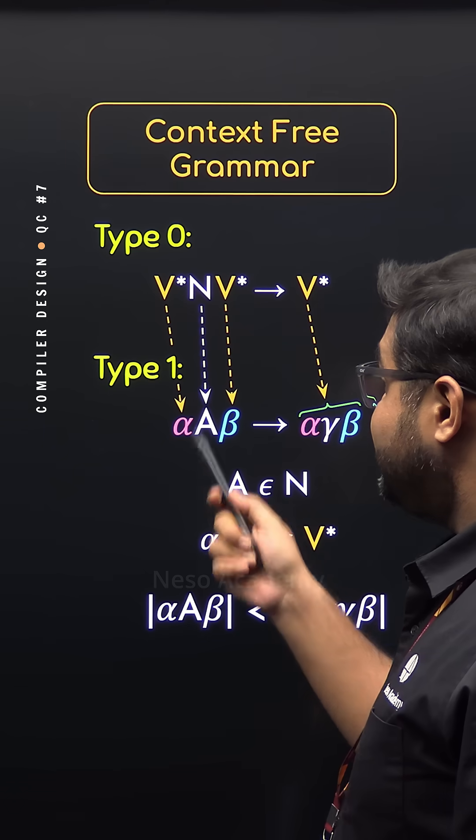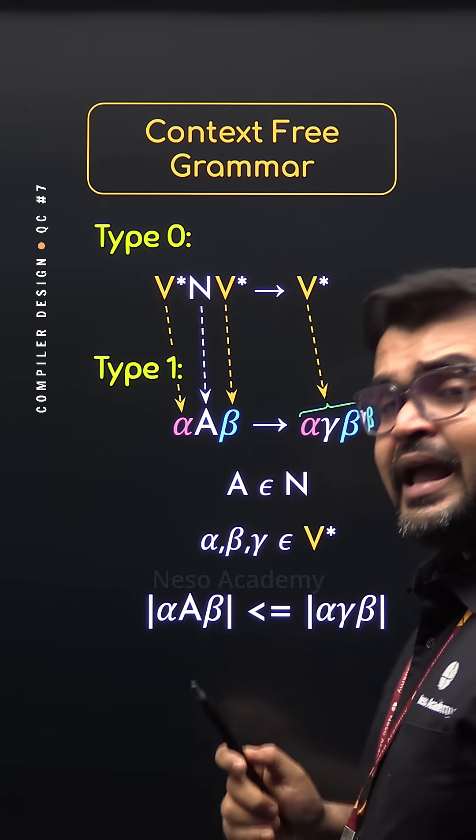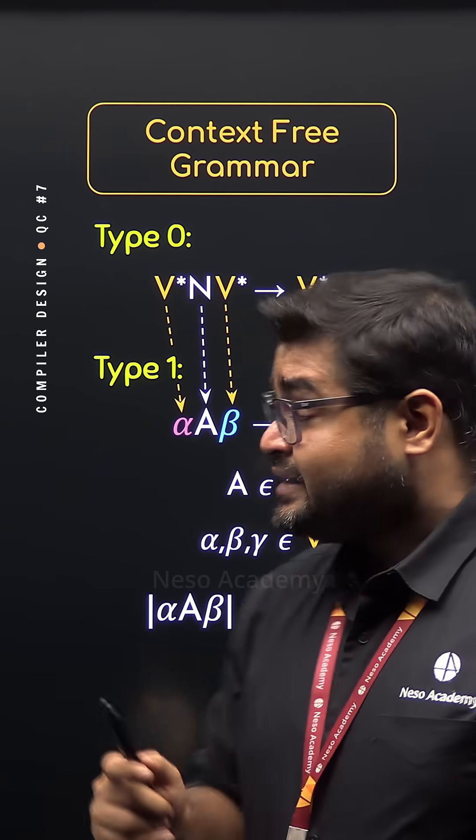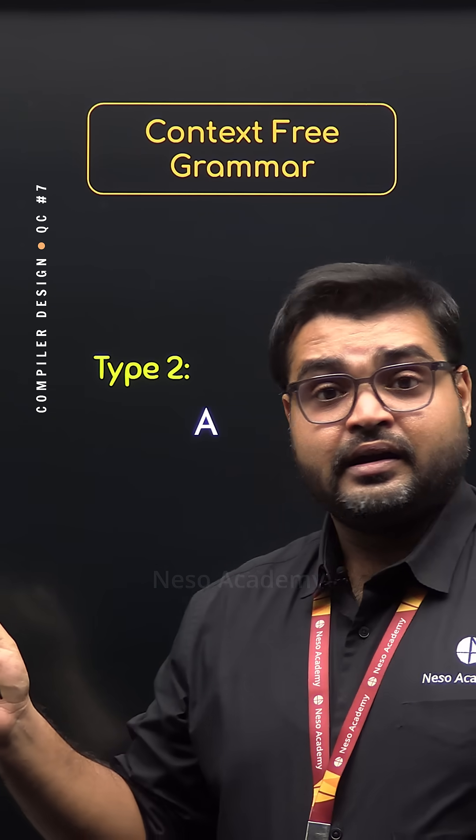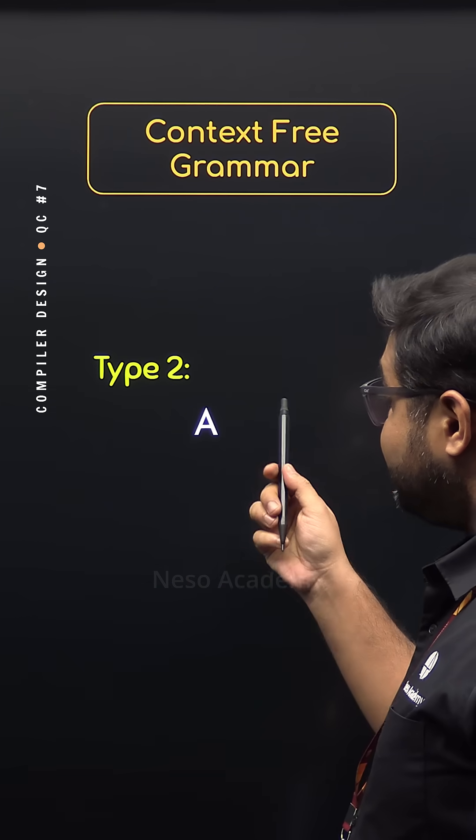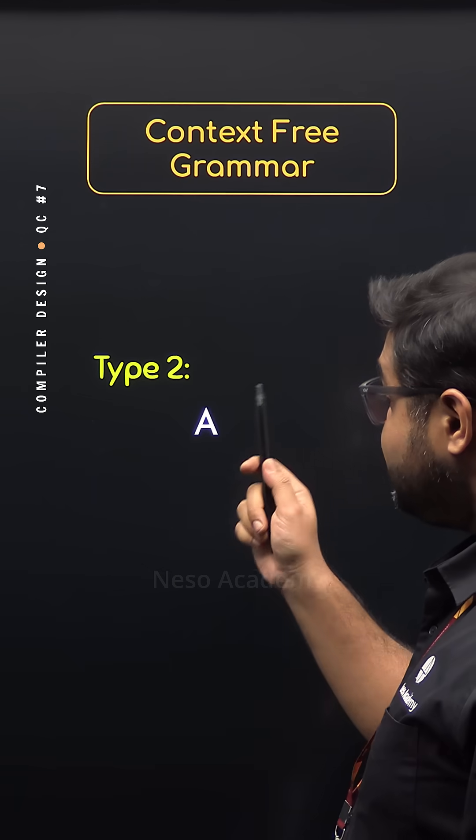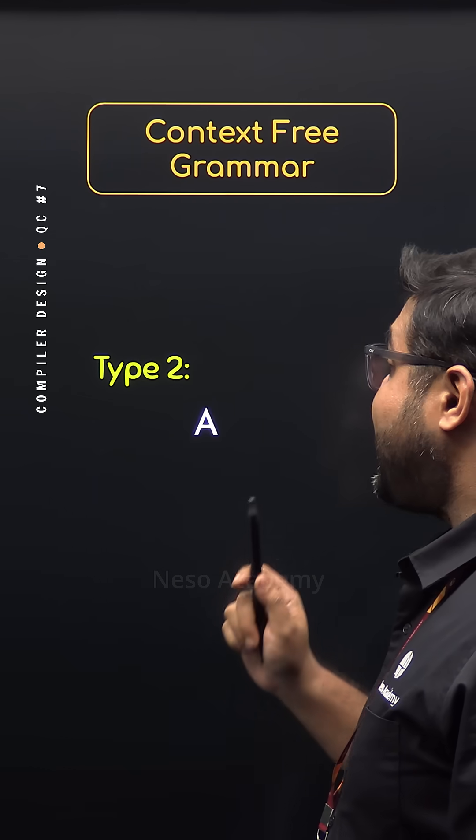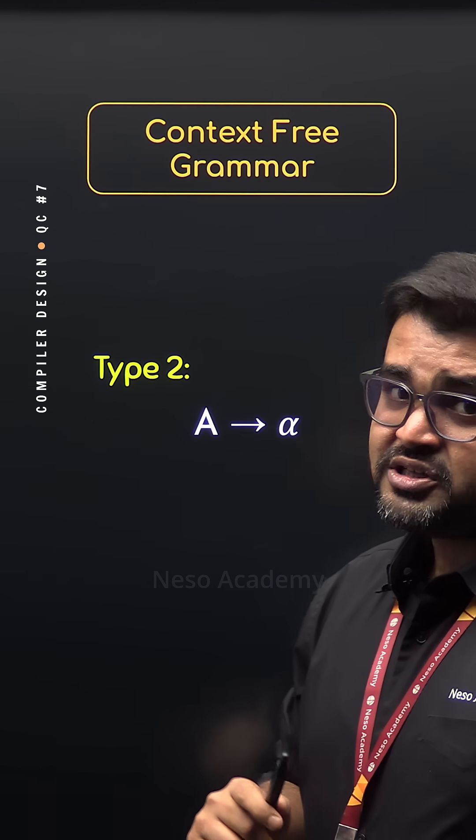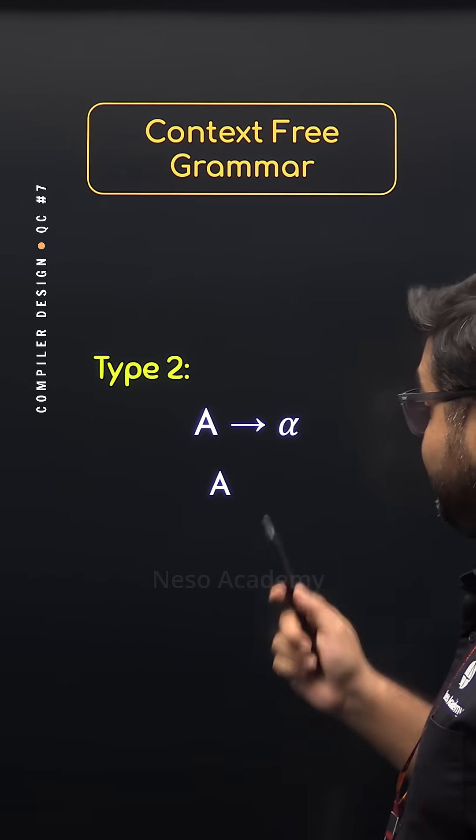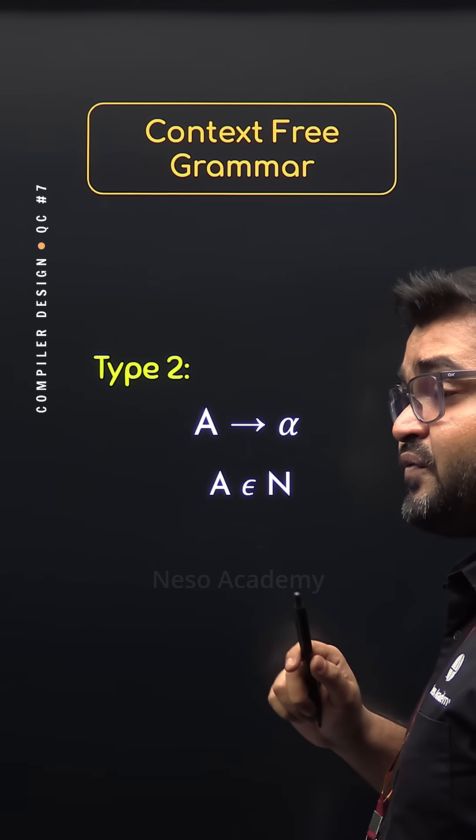And that's why Type 1 is context-sensitive. In case of Type 2, these contexts of the left-hand side are gone. The entire left-hand side is free. The only non-terminal will be there, and it will be able to produce α. Since A is the non-terminal, we can say A belongs to N.